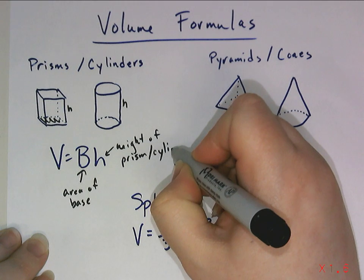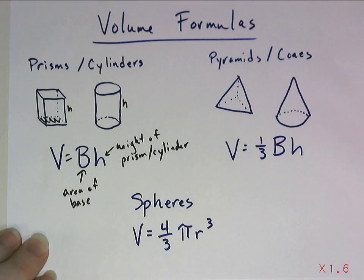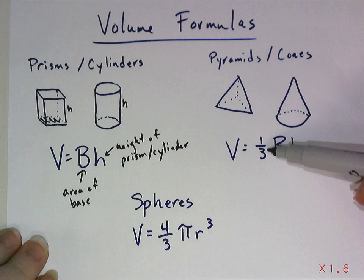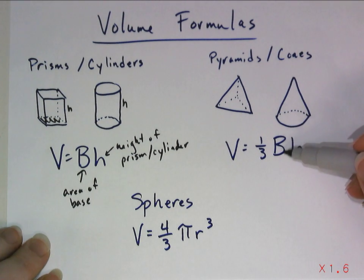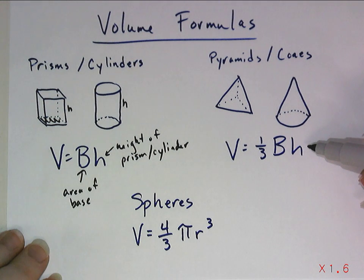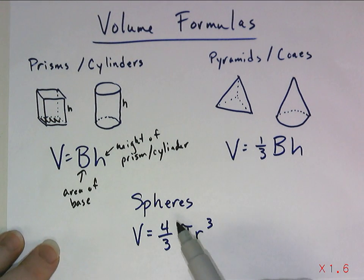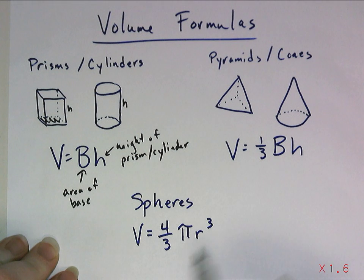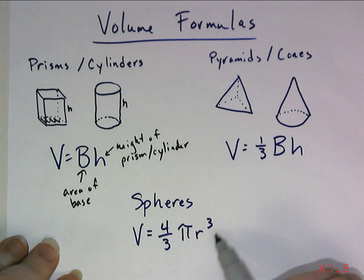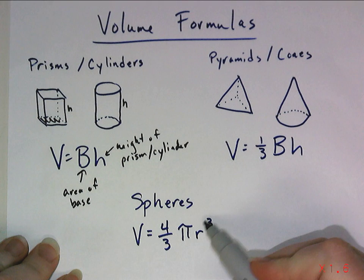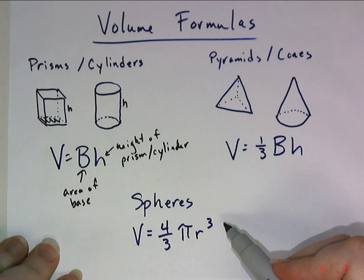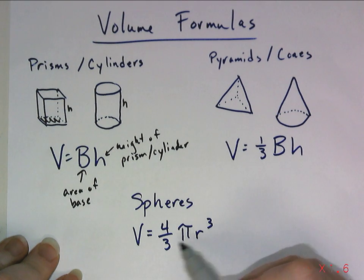When we look at pyramids and cones, it looks really similar. The volume is one-third of, again, the area of the base times the height of the pyramid or the cone. And last but not least, spheres. The volume formula for a sphere is four-thirds pi radius cubed. So because we know exponents come before multiplication, you're going to have to do the radius to the third power before you multiply it by four-thirds and by pi.